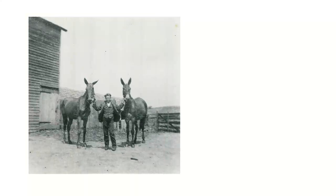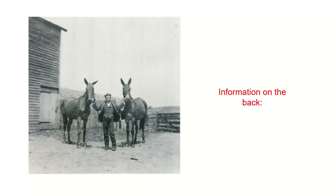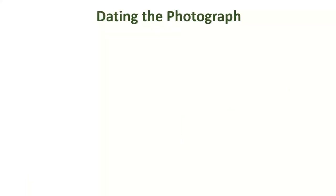If no one's given you any information on a photo, it's a real treasure to find an old photograph with information on the back. In this case, a photograph did have some information on the back, but what it said wasn't very helpful — we don't know who 'dad' is or whose mules those are. An important thing in identifying old photographs is figuring out roughly when it was taken, because dating the photograph is probably the most important part.